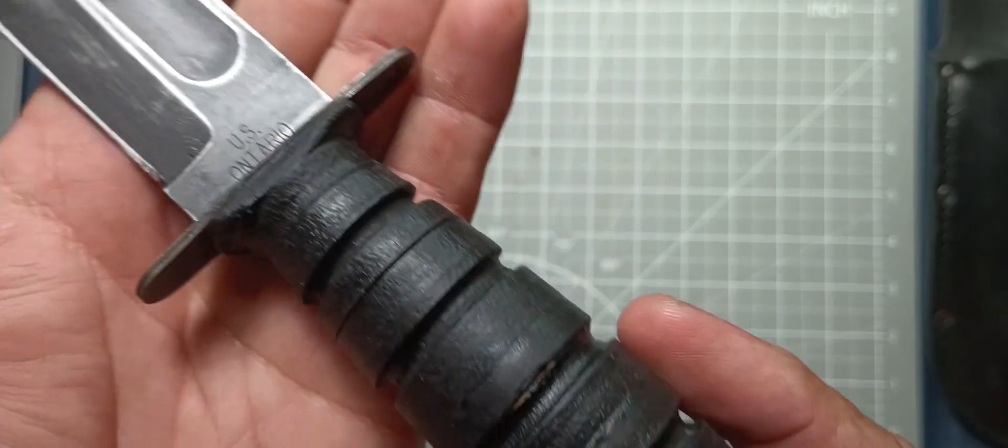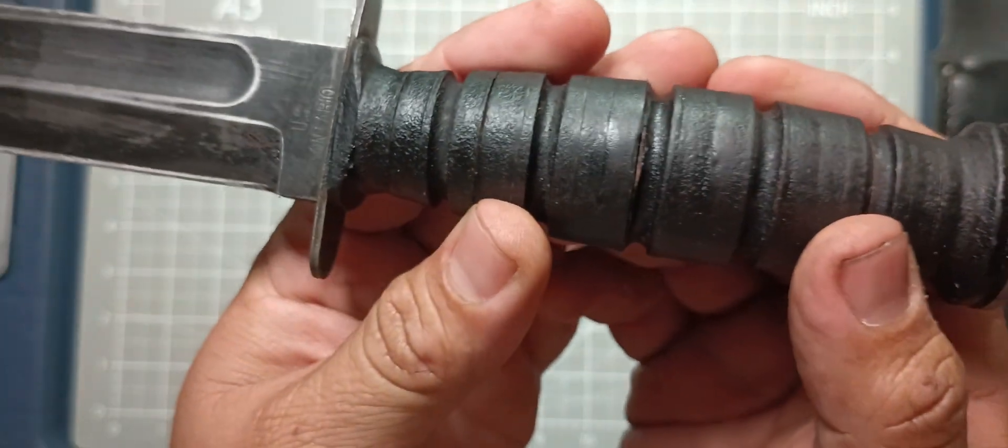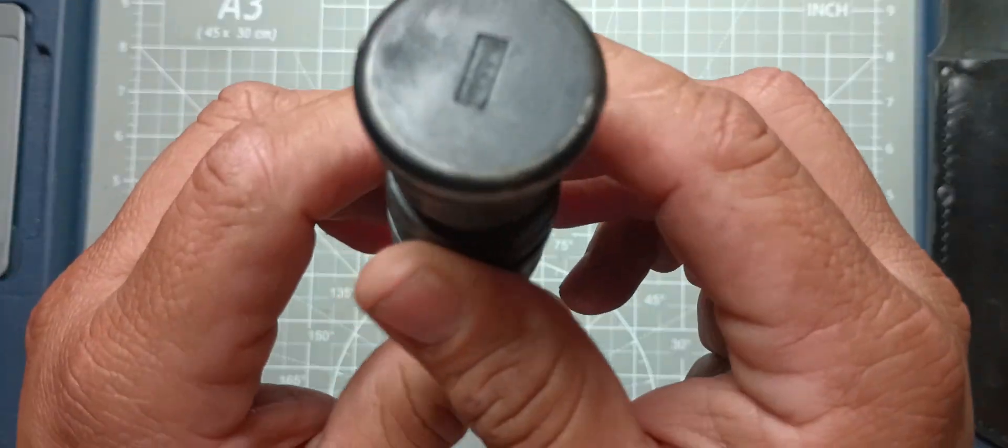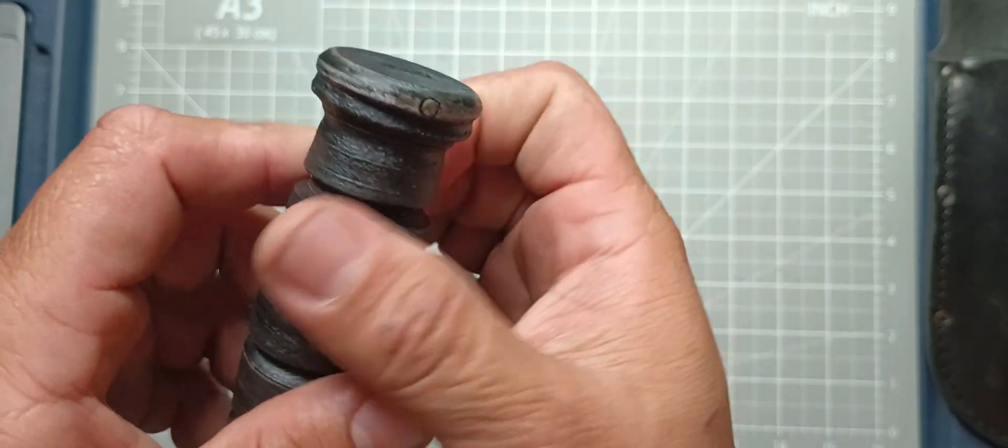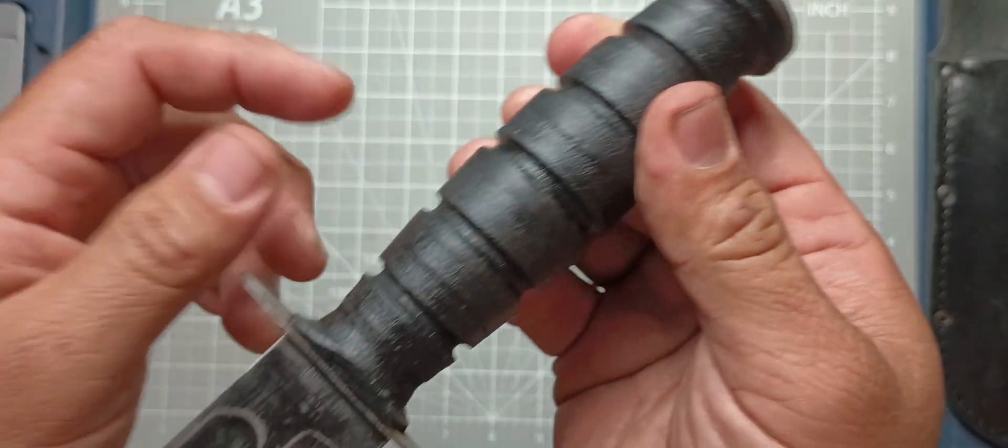US Ontario. Your pommel. End cap. Your rat tail tang. Your steel pin.